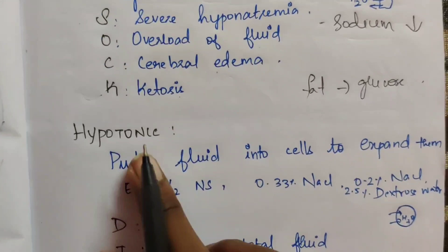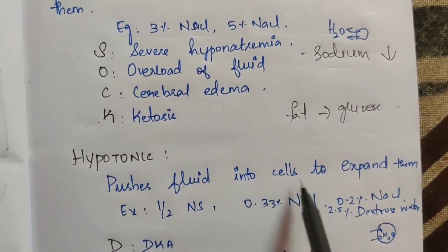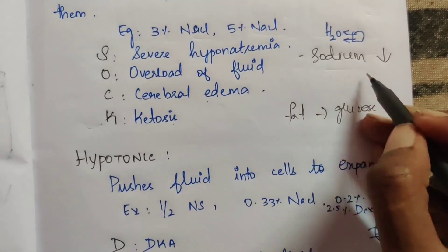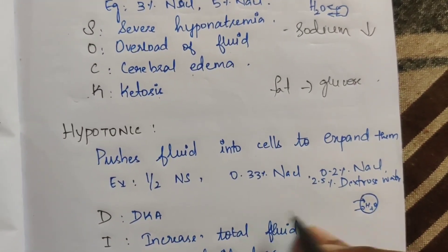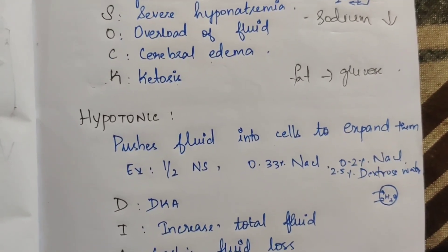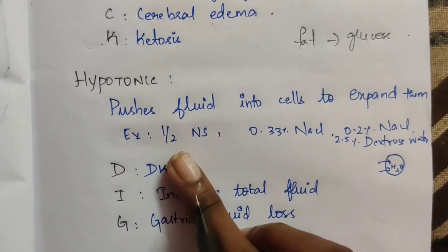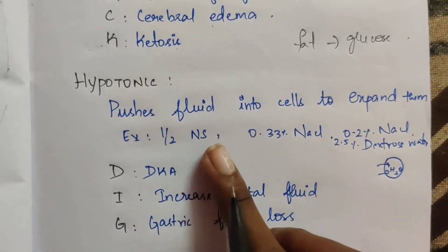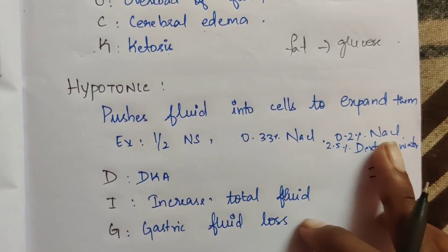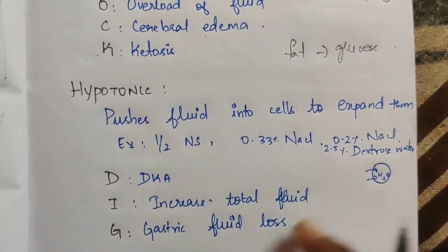Next is hypotonic solution — that is the opposite. It pushes fluid into cells to expand them. Examples include 0.45% NS (half normal saline), 0.33% NaCl, 0.2% NaCl, and 2.5% dextrose in water.